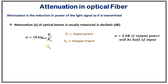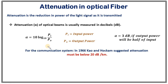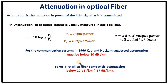Larger the attenuation, the more difficult it will be to transmit light through a long distance. In 1966, Kao and Hockam suggested that the attenuation factor must be below 20 decibel per kilometer to use optical fiber in a communication system. But during that time, available materials had very high attenuation. In 1970, the first silica fiber came with an attenuation factor below 20 decibels — around 17 decibels per kilometer — well below the suggested limit, and as a result, optical fibers were slowly introduced into communication systems.